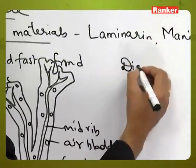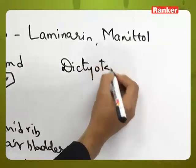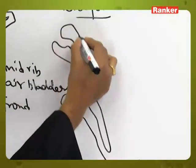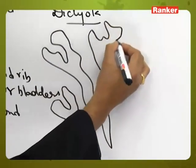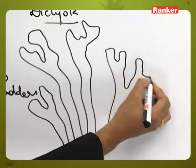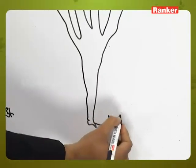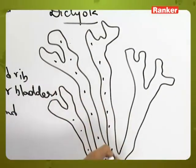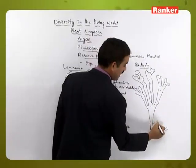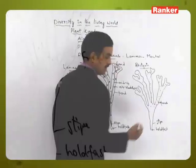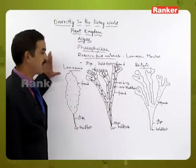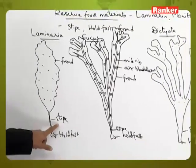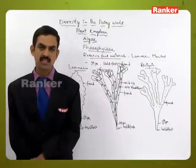In members like Dictyota, we can also see a similar organization with many branching structures — a frond-like organization with holdfast, stipe, and frond. So this is how the body organization is present in different members of Phaeophyceae, with three parts: the holdfast as attachment organ, the slender stipe above it, and the expanded frond concerned with photosynthesis.